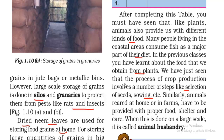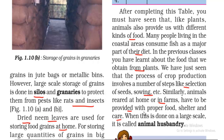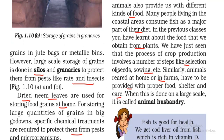Similarly, animals reared at home or on farms need to be provided with proper food, shelter, and care — just like human beings need these things. When this is done on a large scale, it is called animal husbandry.